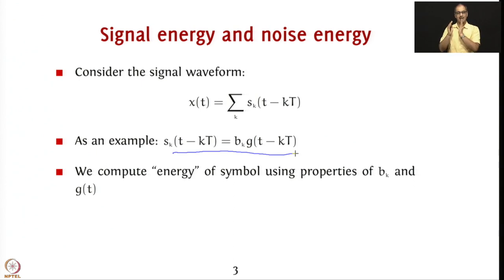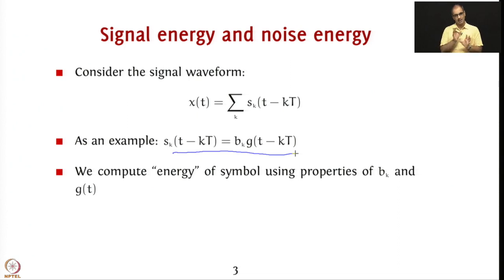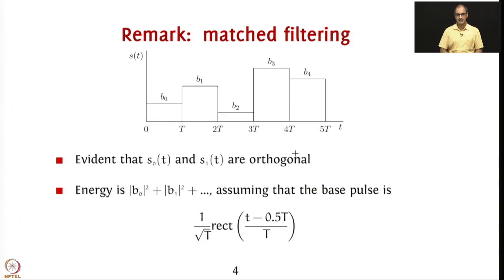The different s_k's convey different b_k's. When we want to compute the energy of a symbol, we look at the properties of b_k and g(t). If b_k · g(t) is the information about the symbol within x(t), the energy of that is what we must account for. There may be intermixing of symbols — for example, a sinc pulse spreads across multiple symbols — but we assume the energy of every symbol is essentially additive. In the context of match filtering with a rectangular s(t), you have b₀, b₁, b₂, b₃ and convolving with a rectangle performs the match filter.